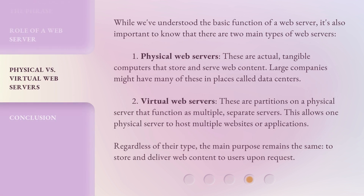While we've understood the basic function of a web server, it's also important to know that there are two main types of web servers. First, physical web servers — these are actual, tangible computers that store and serve web content. Large companies might have many of these in places called data centers. Second, virtual web servers — these are partitions on a physical server that function as multiple, separate servers, allowing one physical server to host multiple websites or applications.